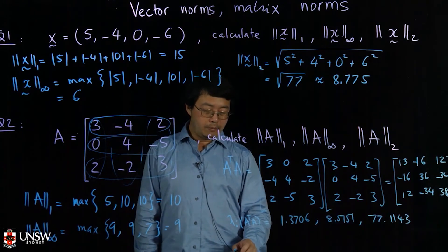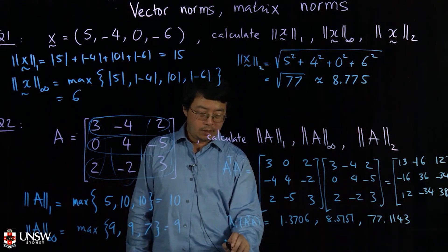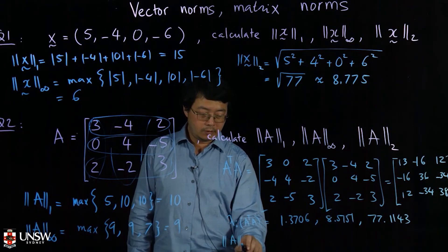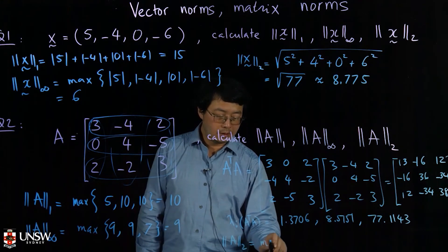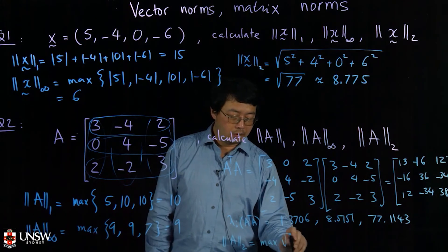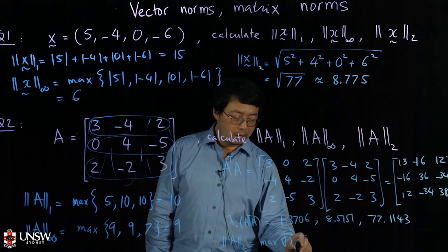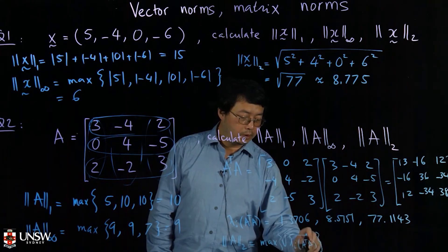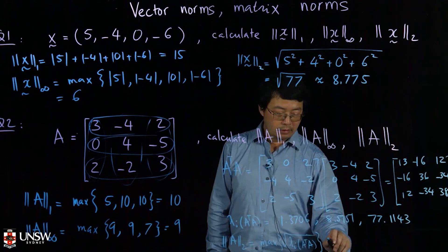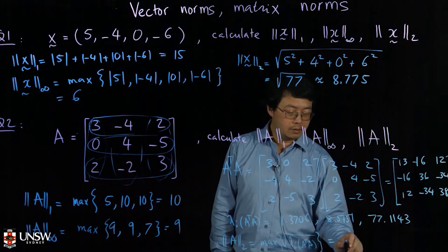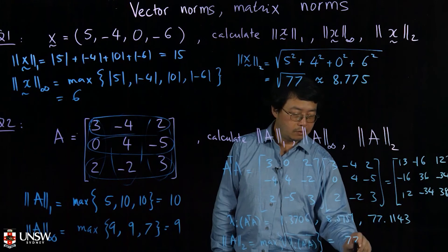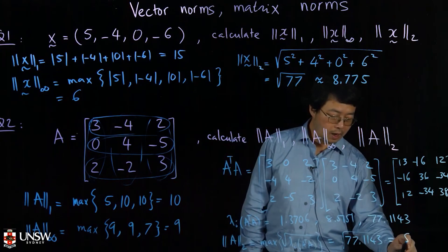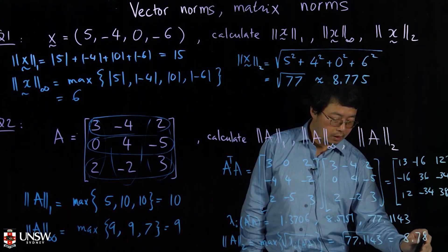We have three eigenvalues, and now we find the max eigenvalue. The max eigenvalue of A^T A is 77.1143. You take the square root, and that gives you the two norm of the matrix: 8.7815.